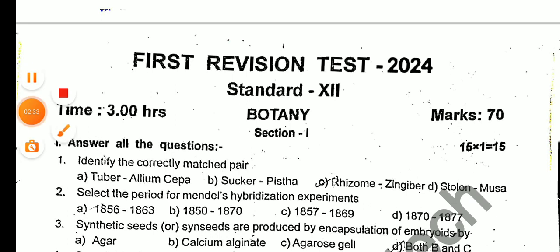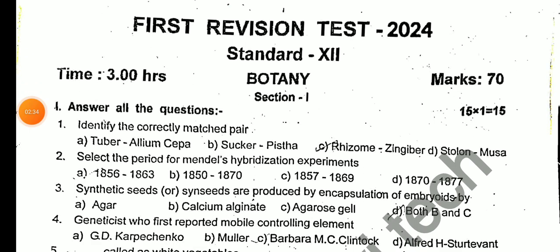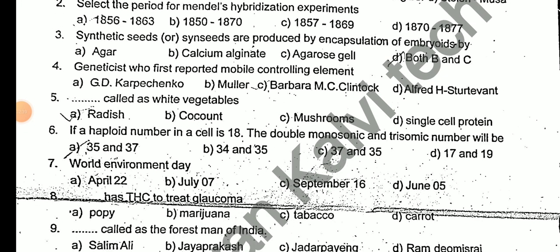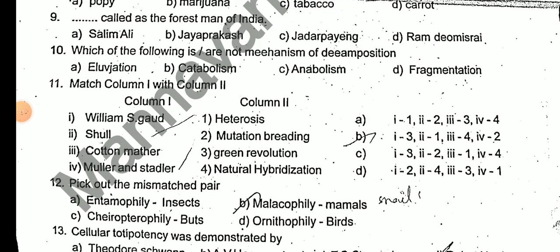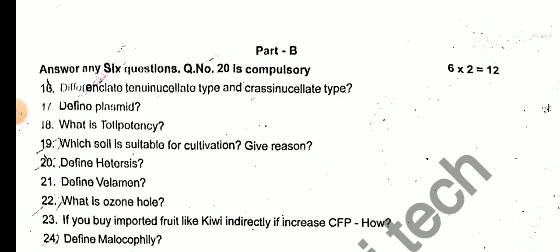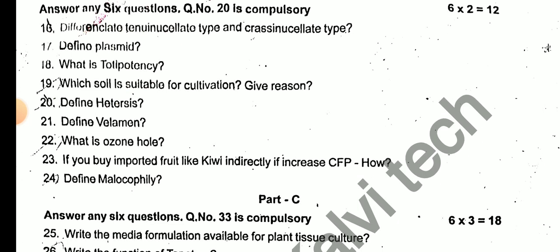This is the First Division test, Entire 34, 12th standard botany — Government official original question paper. For the 2-mark questions: Define the difference between tune and isolate cross. Define plasmid. What is totipotency? Which soil is suitable for cultivation — give the reason. Define etiolation. Define velamen. What is the ozone hole?